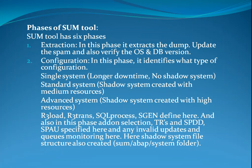There are three types of configurations: single system, standard system, and advanced system. In the single system, there is longer downtime and no shadow system. In the standard system, a shadow system is created with medium resources. R3load, R3trans, SQL process, and SGEN are defined here. Also in this phase, add-on selection, TRs, SPAM, and SPA are specified here, and any invalid updates and queues are monitored. The shadow system file structure is also created here, in the Sum ABAP system folder.